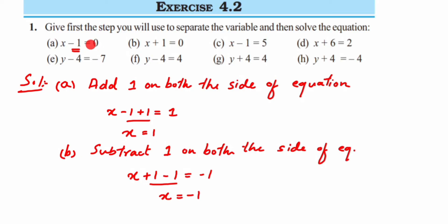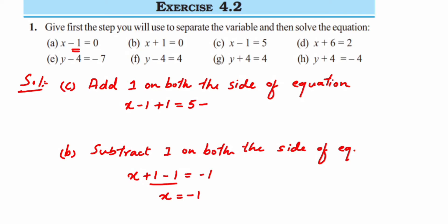Part (c): x minus 1 is equal to 5. This is similar to part (a) — we add 1 on both sides so that minus 1 plus 1 becomes 0. So x minus 1 plus 1 is equal to 5 plus 1, giving x is equal to 6.